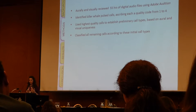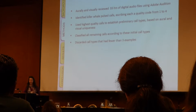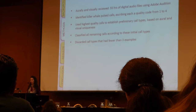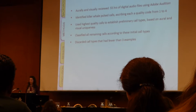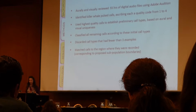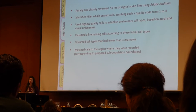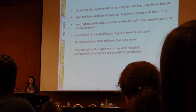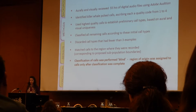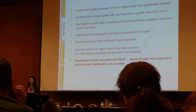After establishing these preliminary call types, I classified all remaining calls against them. When that was completed, I excluded any call types which had three or fewer examples — this was to exclude aberrant calls. I was then able to match the calls to the region where they were recorded, referring back to those proposed subpopulations from the Parsons paper. I want to emphasize that classification of calls was performed blind — I had no knowledge of the region of origin while performing the classification.